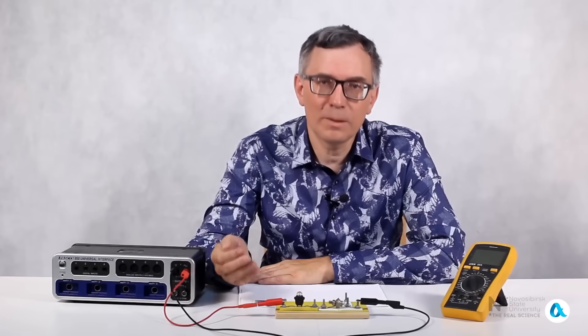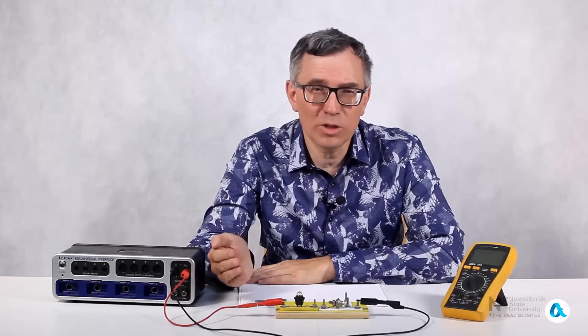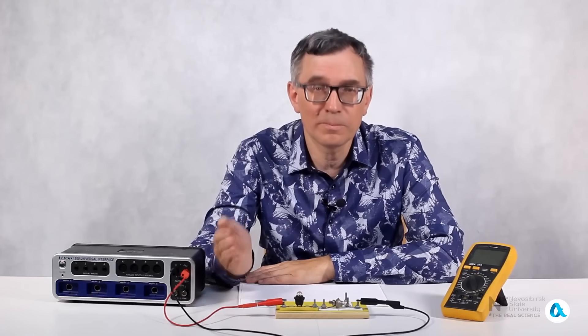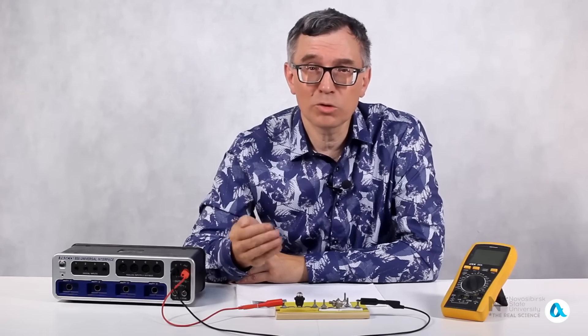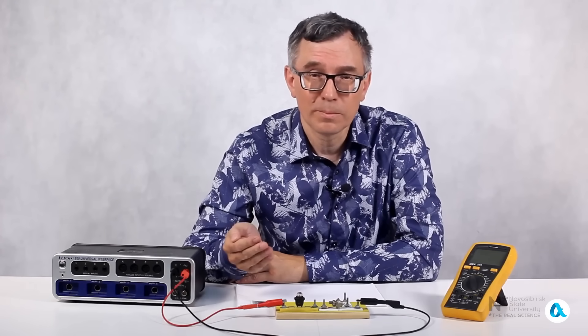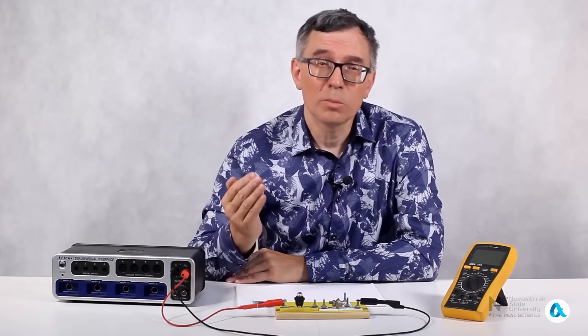Let's summarize. The main application area of thyristors is to switch on a powerful load using a weak control signal. In this case, it is sufficient to apply a short unlocking pulse to the control electrode. And the thyristor will close by itself when the voltage between the anode and cathode drops to a certain small threshold value.